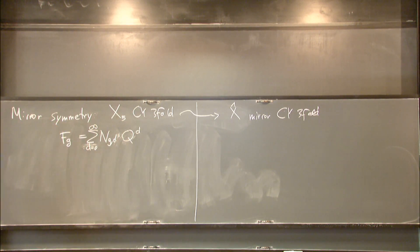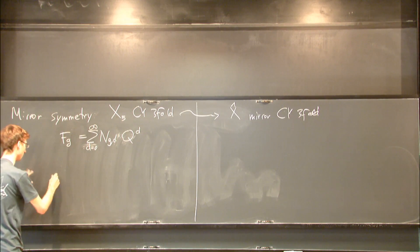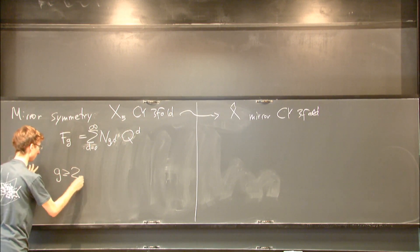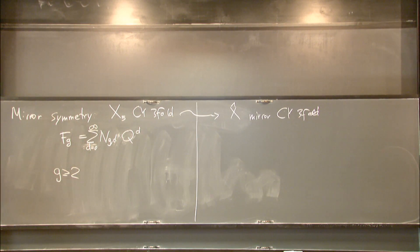You can define Gromov-Witten invariants even for constant maps, but with an exception in genus 0 and genus 1. To be precise, I would want the genus to be at least 2. You can modify the statement for genus 0 and 1.